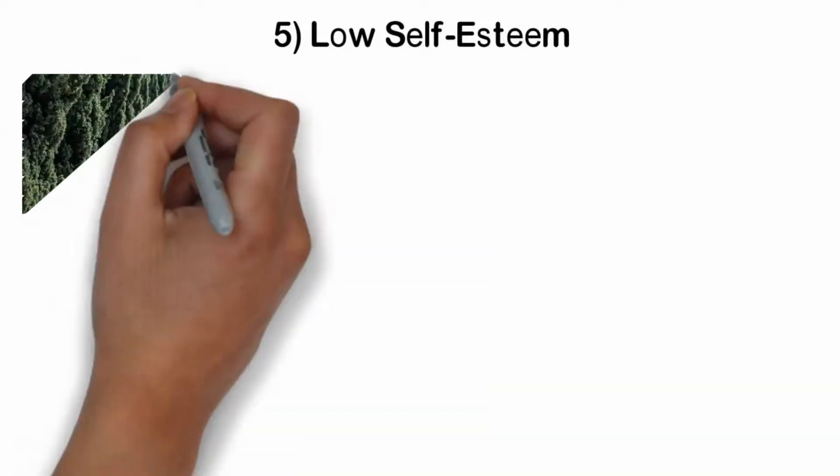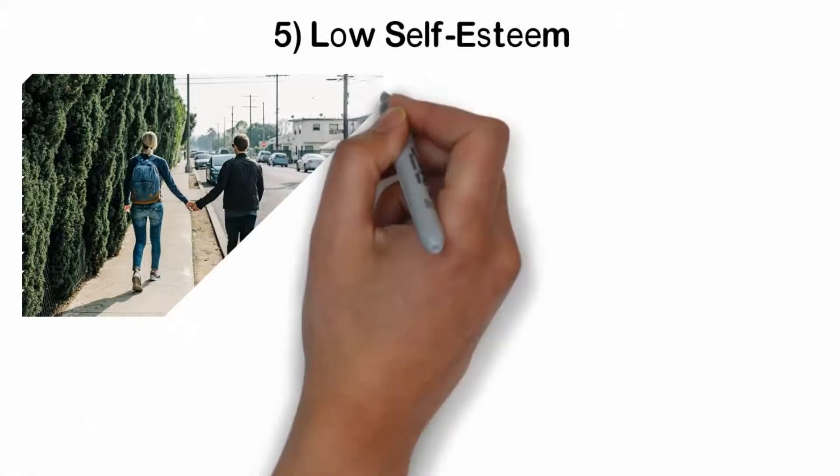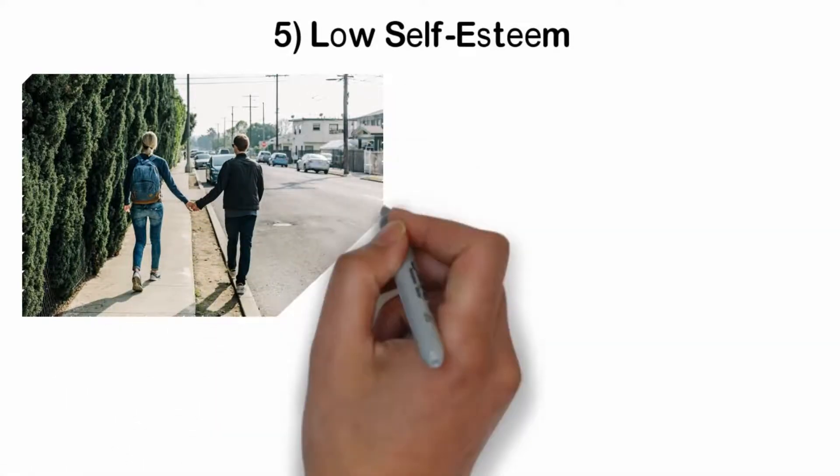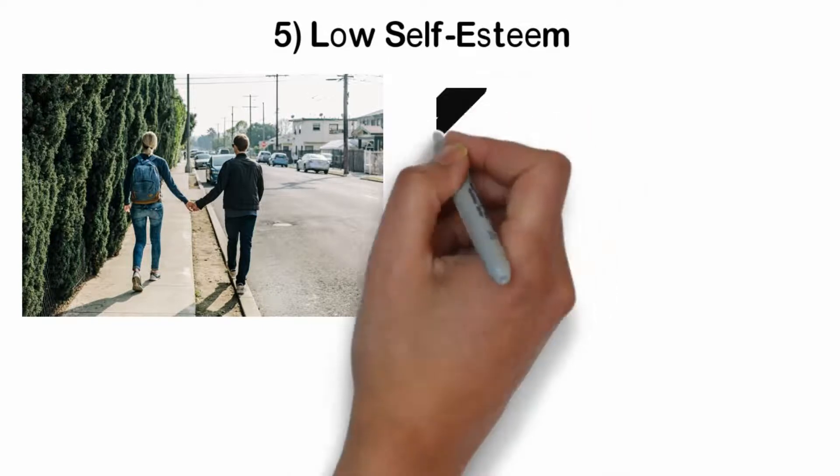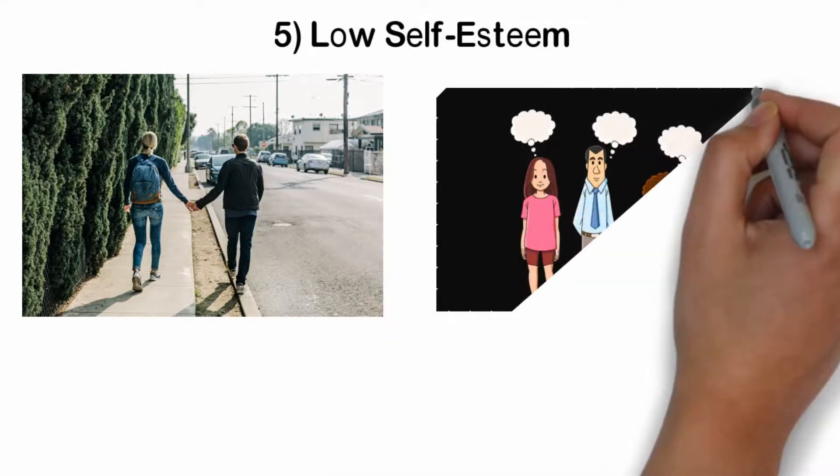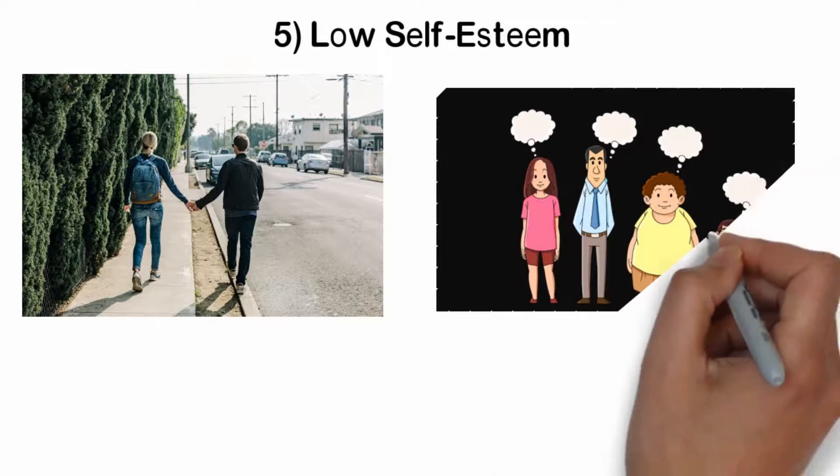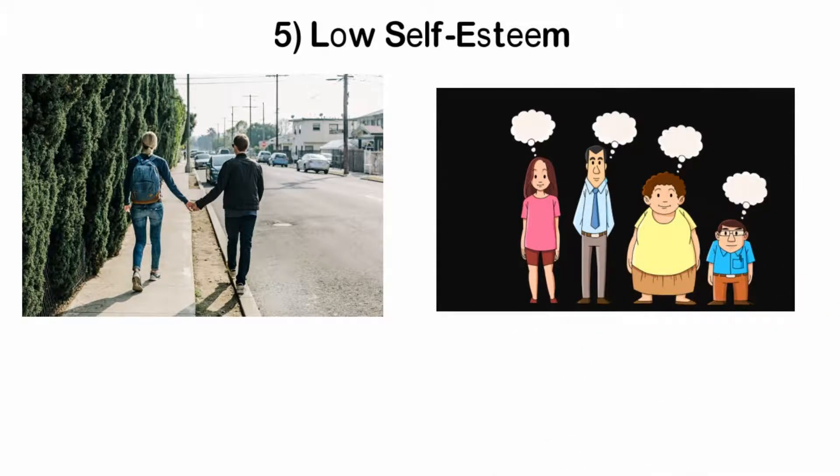Number 5. Low self-esteem. Many people want a fulfilling relationship more than anything, but they believe even more firmly that no one worthwhile would be interested in them. We all possess critical inner voices that tell us we are too fat, too ugly, too old, or too different. When we listen to these voices, we engage in behaviors that push people away.